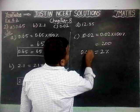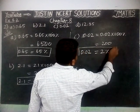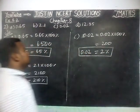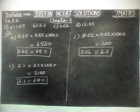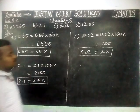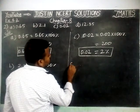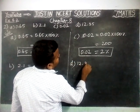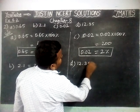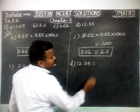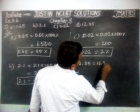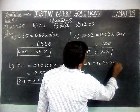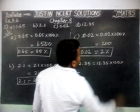So the answer is 2%. Therefore, 0.02 is equal to 2%. Now we are going to solve the last option, Part D.